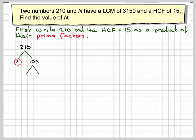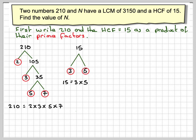which is divisible by three. And you get three and thirty-five. You should put a circle around the prime numbers if you use this method. And thirty-five is five times seven. So 210 as a product of its prime factors is two times three times five times seven. And fifteen will be three and five because three times five makes fifteen.